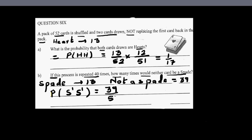And secondly, once that has happened, now you've got only 51 cards and that not to be spade would be 39 out of 51. Because the first is not spade which is you've got 39 cards which are not spade and the probability that it's not spade is 39 out of 51.